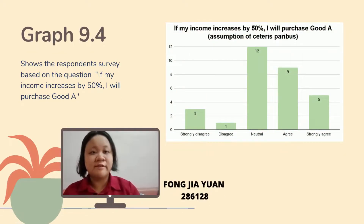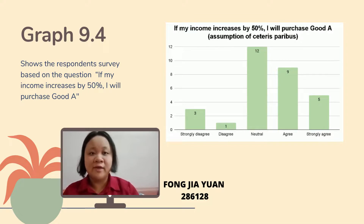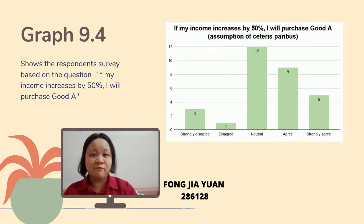Graph 9.4 shows survey results on 'if my income increased by 50%, I will purchase good A.' From 30 respondents, 12 chose neutral, 9 chose agree, and 5 chose strongly agree. The lowest response was 1 person who chose disagree, followed by 3 who chose strongly disagree. We can conclude that good A provides more satisfaction to customers, so when consumers' income increases, they will choose good A to satisfy their needs.